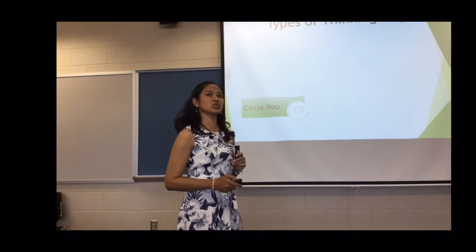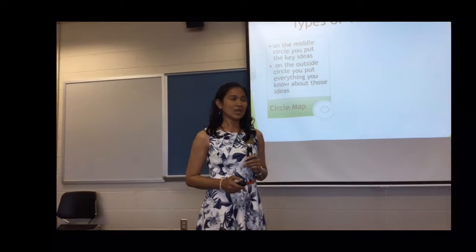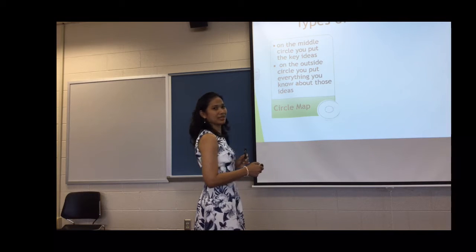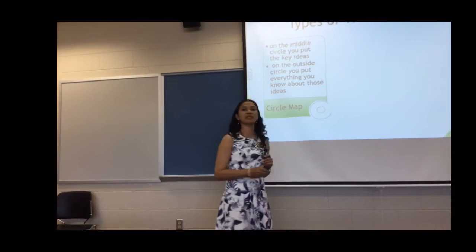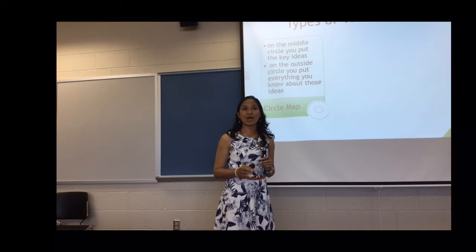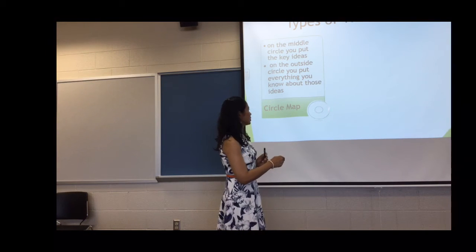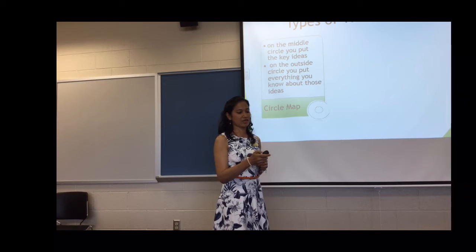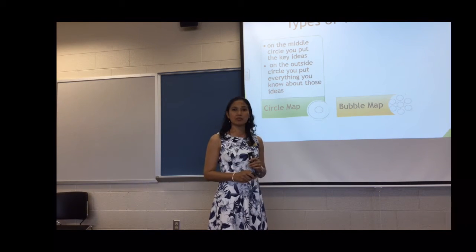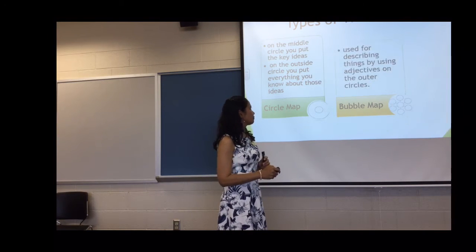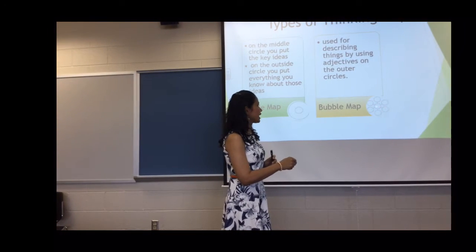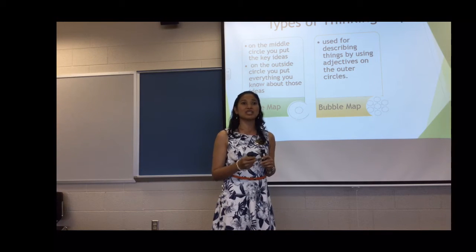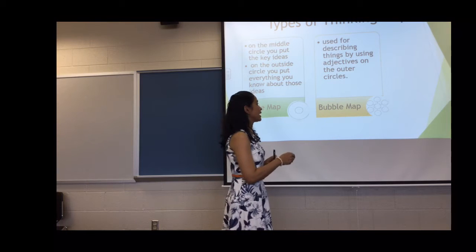I'll be discussing the eight thinking maps we can use in our classroom. The first one is what we call a circle map. A circle map has two particular circles: the inner one and then the outer circle. The inner circle will be the key idea that we will be writing on, and then the outer circle will be all the ideas you brainstorm about that main idea. The second one is what we call a bubble map. In a bubble map, at the middle you have the main idea, and then on the outer circles you use adjectives to describe the main topic.